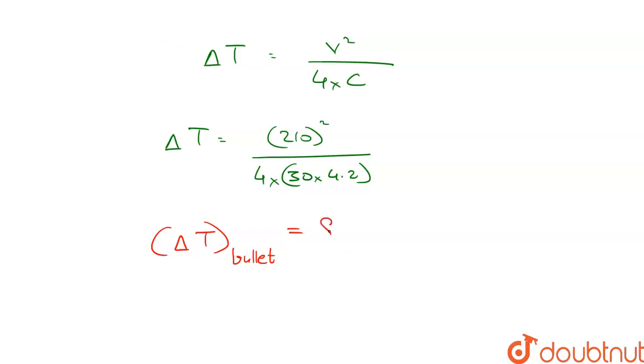Upon calculation we get delta T of bullet is equal to 87.5 degree celsius. This is our final answer.